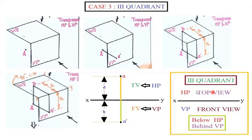In the third quadrant we can say: top view will be above and front view will be below. Above the XY line we get HP and below XY we get VP. This point is below the horizontal plane and behind the vertical plane.